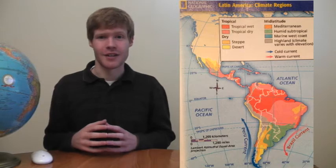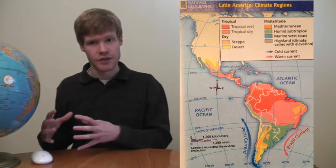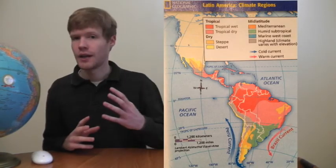Another important climate region is humid subtropical. These regions are common in southeastern South America. It was very common in this area to have very dense forests, many of which have since been cut down to make way for grasslands used for cattle and ranching.